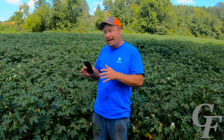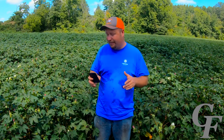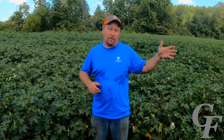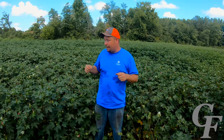Just to give you a few facts about what one bale of cotton can produce — a bale of cotton is officially 480 pounds of lint, generally fluctuating between 480 and 500 pounds. One bale of cotton can make 850 ladies' shirts, 8,400 handkerchiefs, 400 men's pajamas, 540 men's dress shirts, 500 adult sweatshirts, and so on. Year in, year out, American producers produce about 15 million bales of cotton, of which about 80 percent is exported to mills overseas where labor and costs are cheaper, and the raw cotton is transformed into fabrics and clothing, which is then imported back into the US.